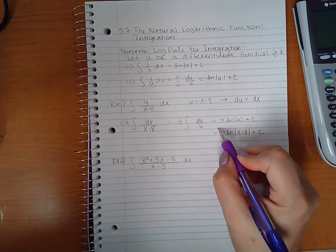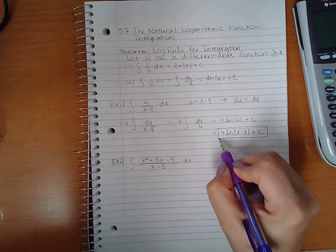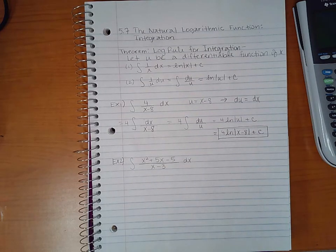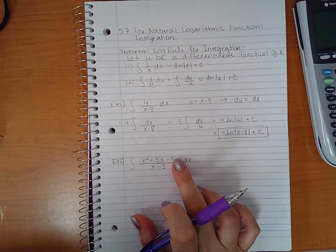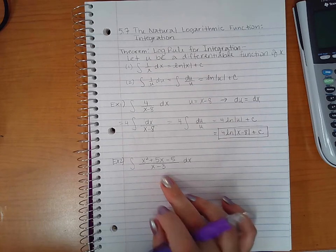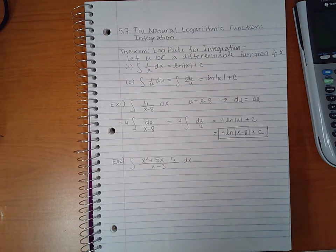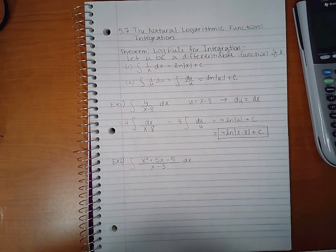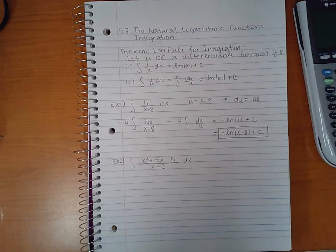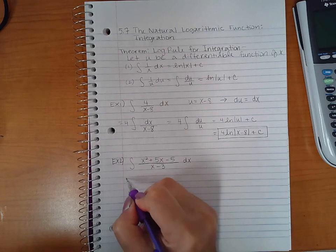Now example 2 is a little bit more complicated. Here your degree is higher in the numerator than is in the denominator. So in this case you might actually have to divide and simplify this before you begin the problem. So if we perform long division.